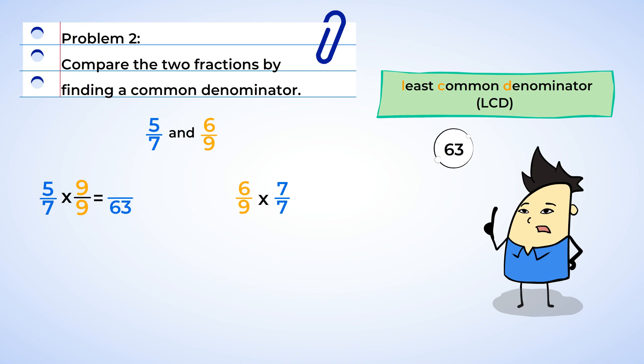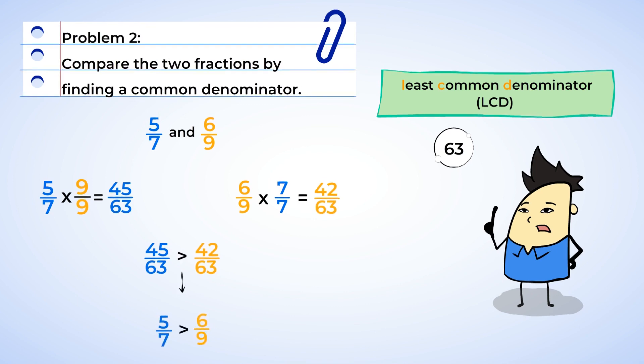Five times nine is forty-five, so five-sevenths is equivalent to forty-five over sixty-three. And six times seven is forty-two, so six-ninths is equivalent to forty-two over sixty-three. And now we can compare them. Well, forty-five is greater than forty-two, so five-sevenths is greater than six-ninths.